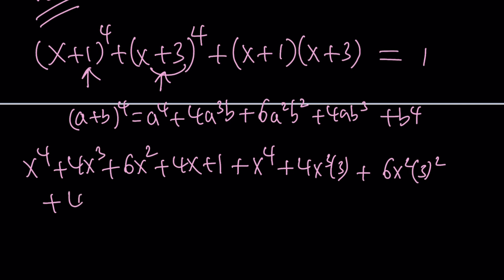Plus 4 times x times 3 cubed, because that's where we are, plus b to the 4th, which is 3^4. And then we have to follow by this product, which you can distribute. Let's do that right now. So we can get the whole thing pretty much. That will be x^2 plus 4x plus 3.